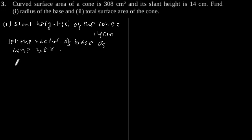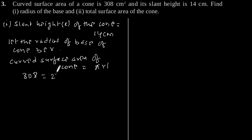By using curved surface area of cone formula which is equal to πRL. Curved surface area of cone is given, that is 308, and putting the value of L which is 14, we will get value of r is equal to 308 divided by 44 which is equal to 7 cm.